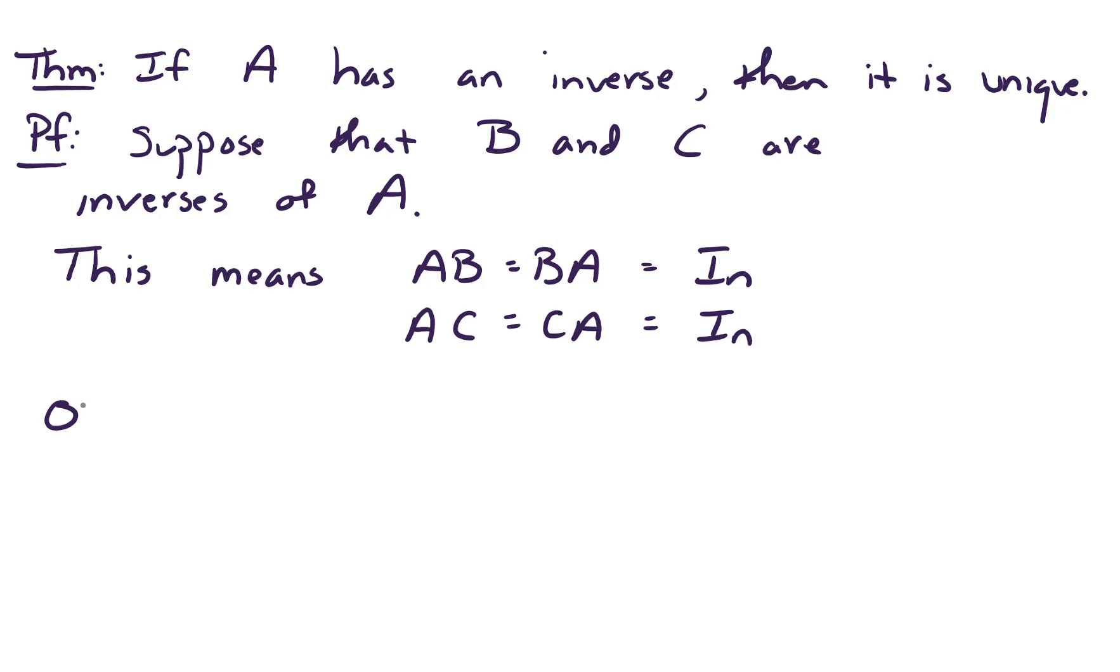But observe that C times AB. Well, what would that equal? Well, AB is just the identity matrix. So this would equal C times the n by n identity matrix. So on the right hand side, we have C.